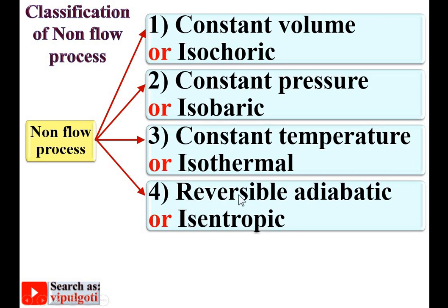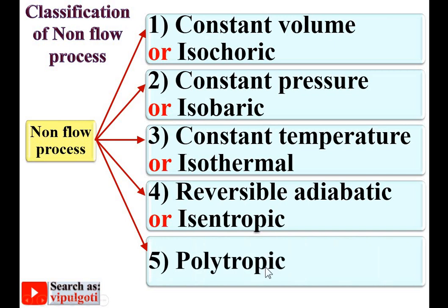Sometimes instead of reversible adiabatic process it is simply called adiabatic process, but you have to understand it refers to the reversible adiabatic process, because only if it is reversible adiabatic is it called isentropic. Fifth, polytropic process. These all processes we are going to see in detail in different videos on this YouTube channel.